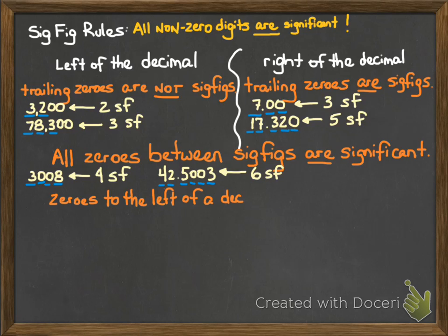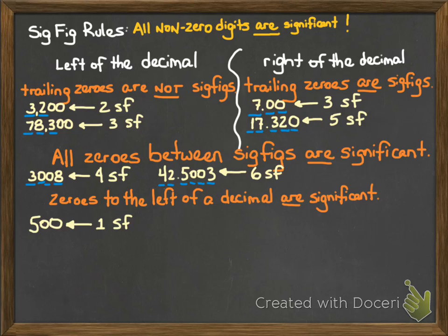Zeros to the left of a decimal point are significant. The last two rules on this screen are seldom used, but you'll see them from time to time. Let's take a look at the number 500. 500 has one sig fig — the two trailing zeros, since we're to the left of a decimal and the decimal's not there, are not significant. However, if we put a decimal point in, 500 with a decimal point actually has three sig figs. The five is significant because it's a non-zero digit. The zero is significant because we've added that decimal point, and since we're now bracketing the middle zero by two significant figures, it becomes significant.